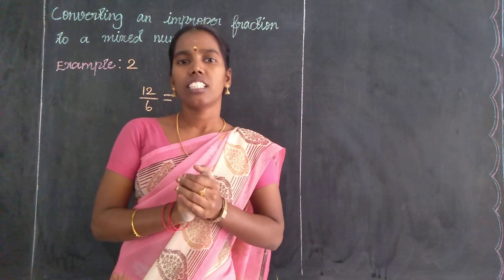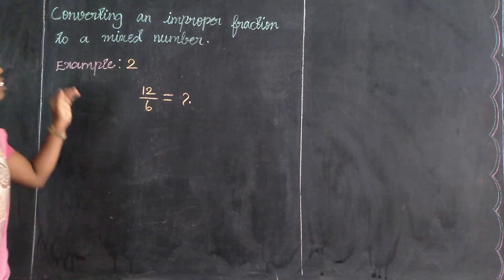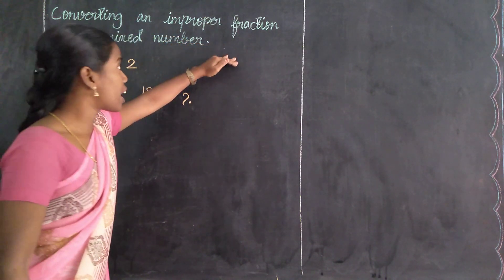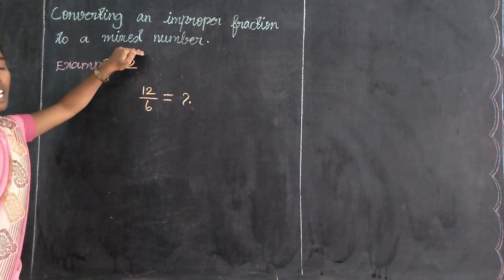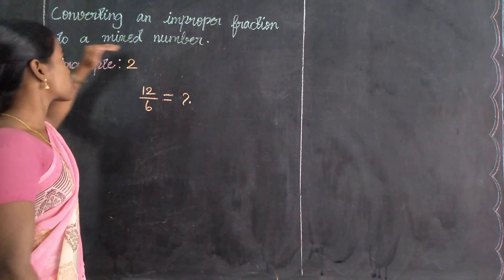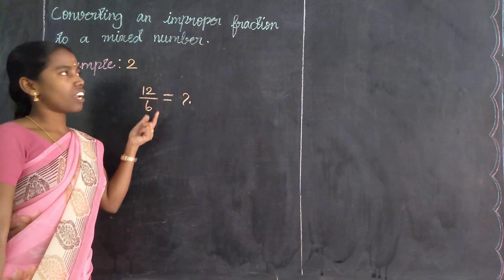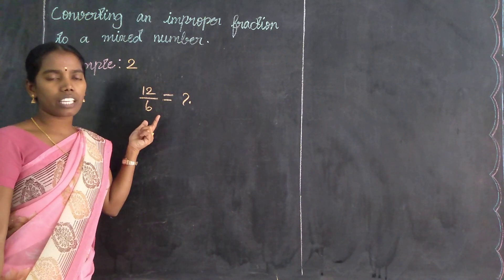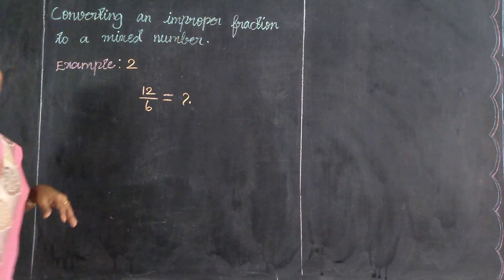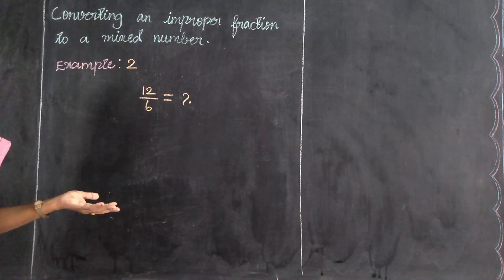Welcome students. This is the example problem: converting an improper fraction to a mixed number. Number 3 — improper fraction to a mixed number. This is the improper fraction they give us to convert to a mixed number. Now, how to convert this improper fraction?